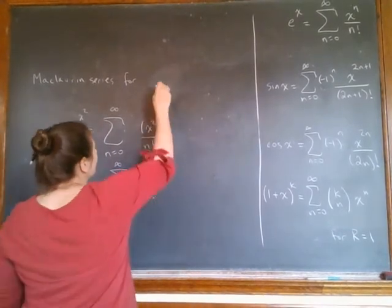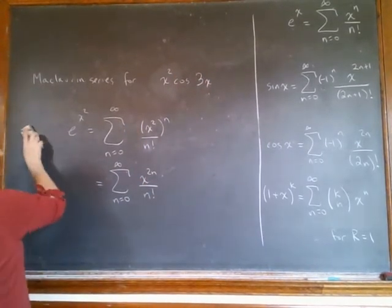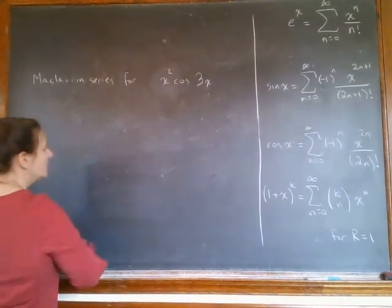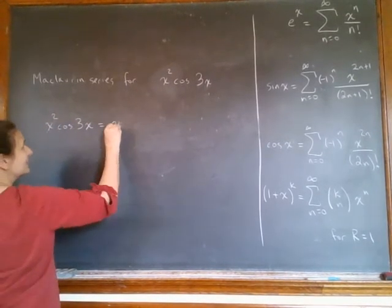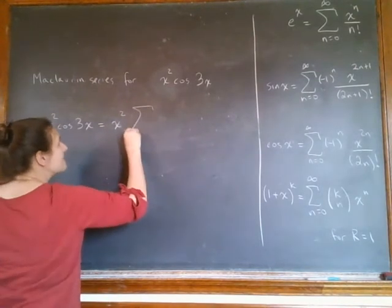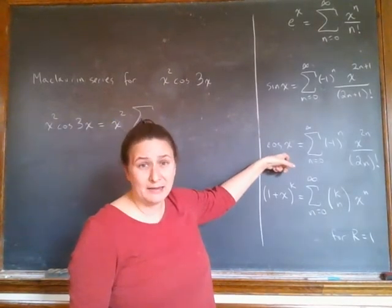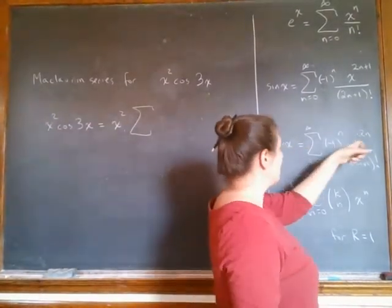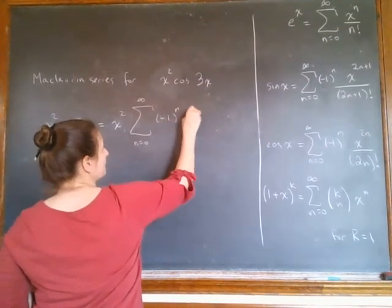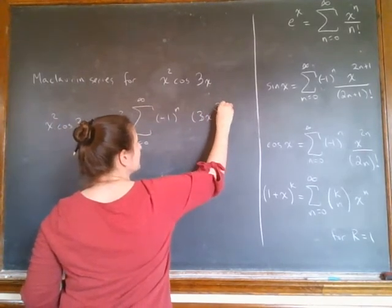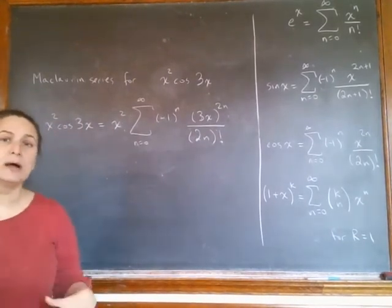Similarly, let's do something like x squared times cosine 3x. Similar to what we did before, I'm just going to leave the x squared on the outside for a minute. I'm just going to take my cosine 3x, go over here. Here's x, I'm going to put in 3x for the x, in here, and then it's going to be in here.